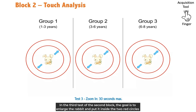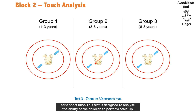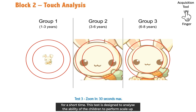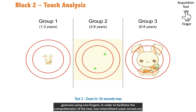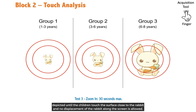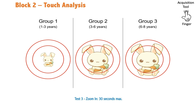In the third test of the second block, the goal is to enlarge the rabbit and put it inside the two red circles for a short time. This test is designed to analyze the ability of the children to perform scale-up gestures using two fingers. In order to facilitate the comprehension of the test, two intermittent outer arrows are depicted until the children touch the surface close to the rabbit, and no displacement of the rabbit along the screen is allowed.